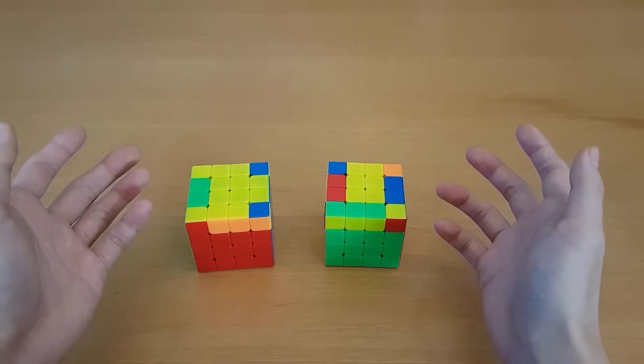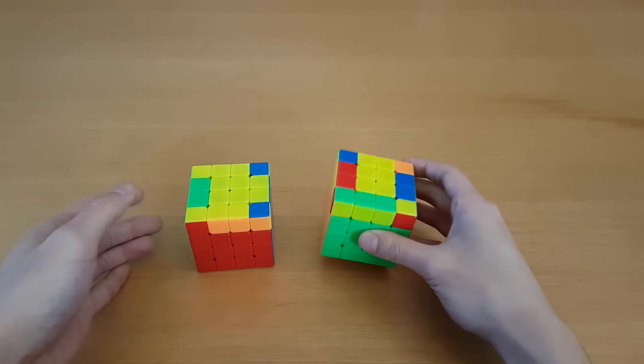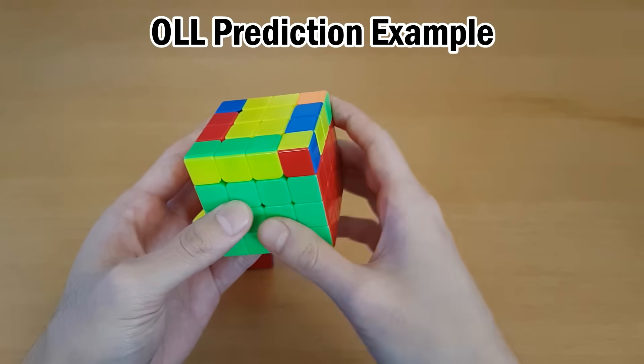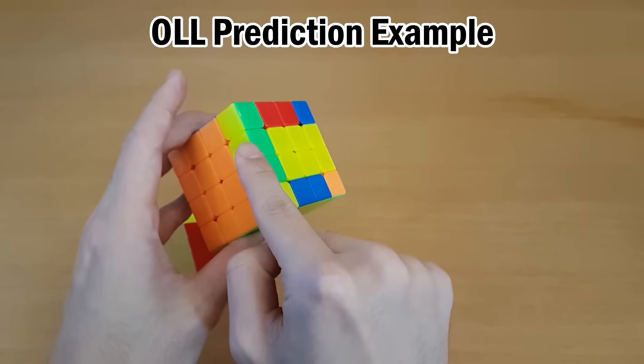There are a lot of tricks you can learn with 4x4 OLL Parity to make OLL faster. So for example, for this case, you can choose to flip this edge, this edge, or this edge.